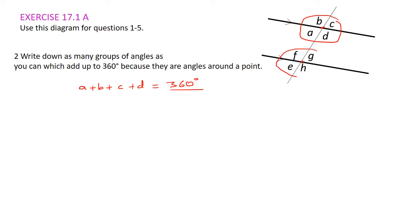Similarly, looking at the bottom point, we've got this group of angles all at a single point, so e plus f plus g plus h must equal 360 degrees. Check your answer, make sure you've got it right, give yourself a tick if you did, and let's move on.